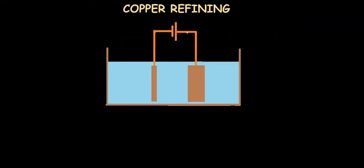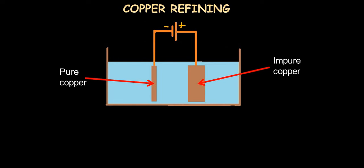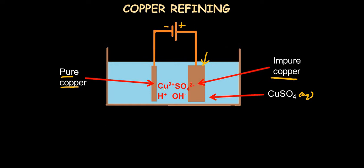Now let's see the difference with copper refining. The setup is similar to the electrolysis of aqueous copper sulfate, but the electrodes are different. The cathode is made of a thin sheet of pure copper, and the anode is made of impure copper obtained from the extraction process. The electrolyte is aqueous copper sulfate solution, containing Cu²⁺, SO₄²⁻, H⁺, and OH⁻ ions.